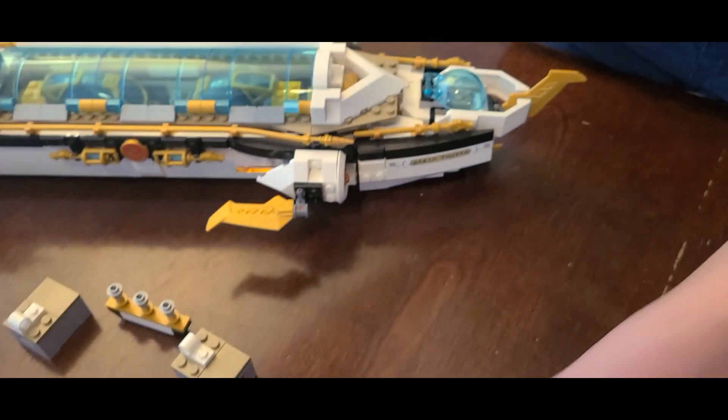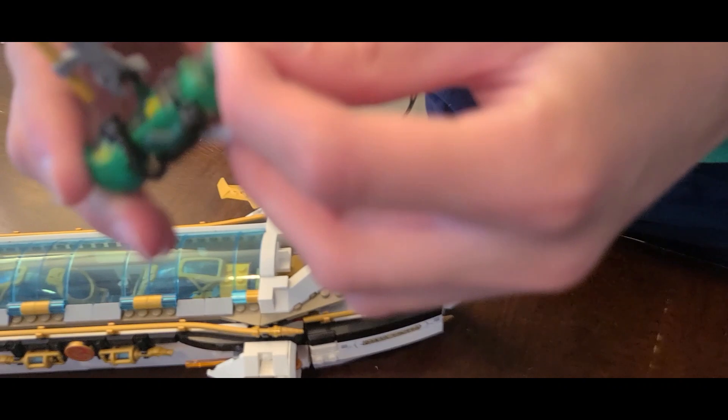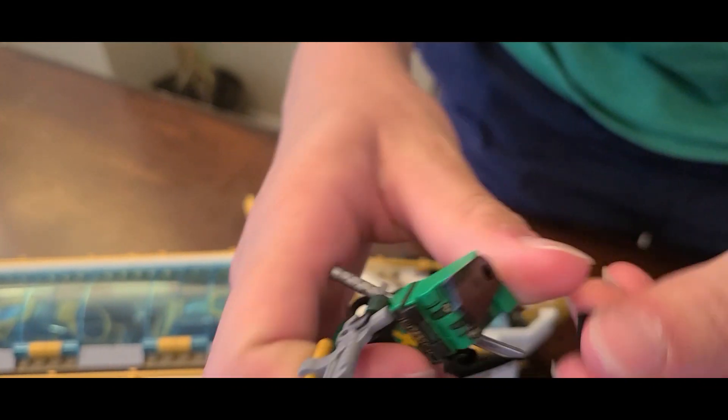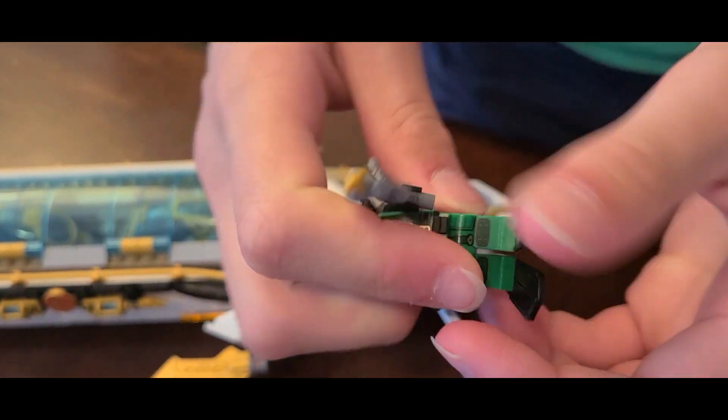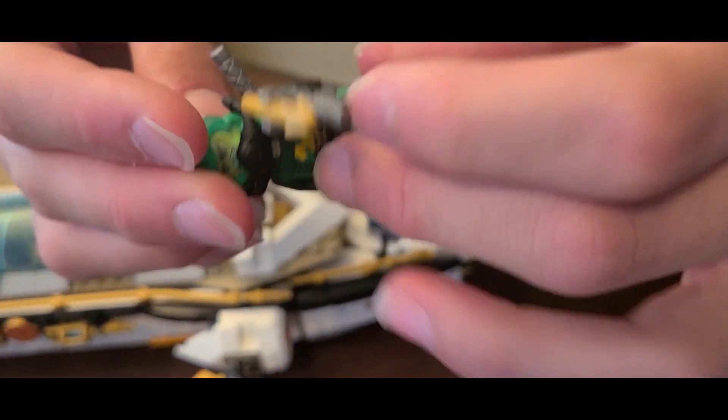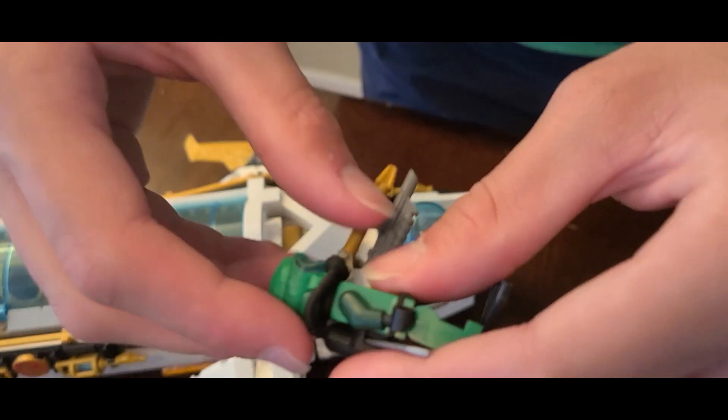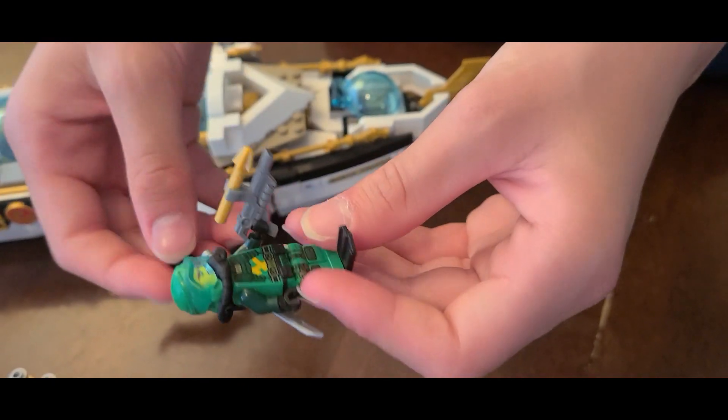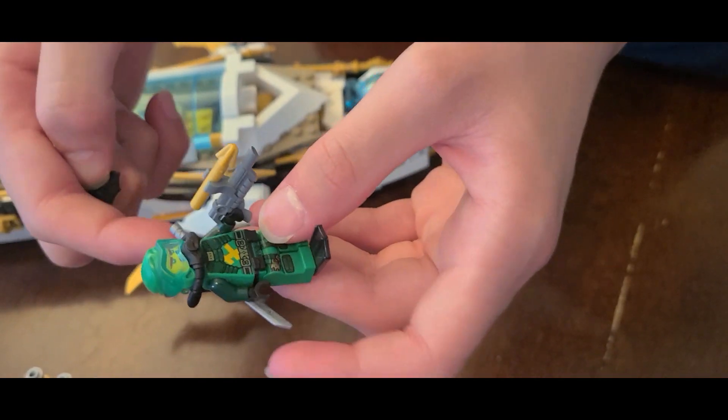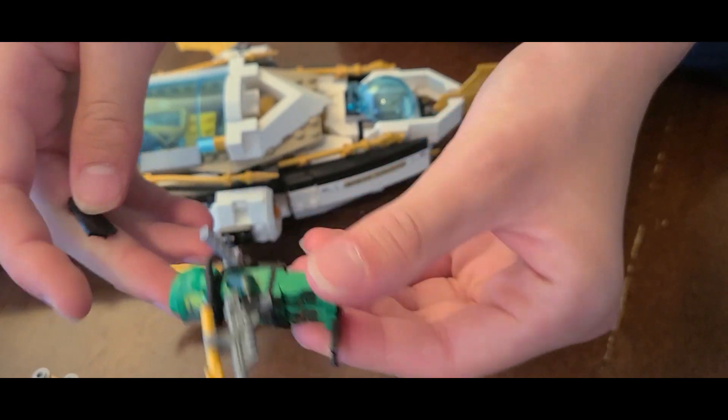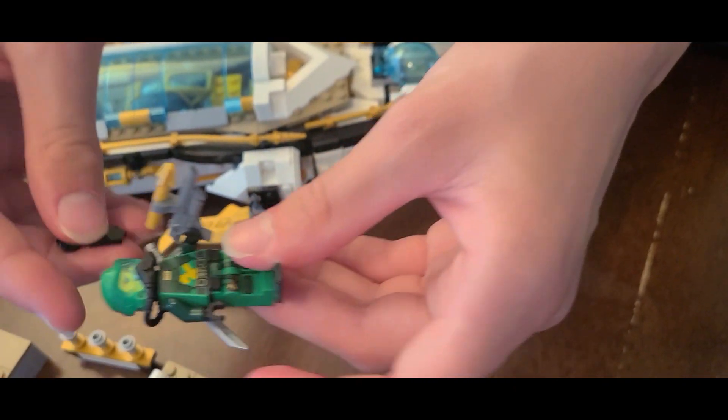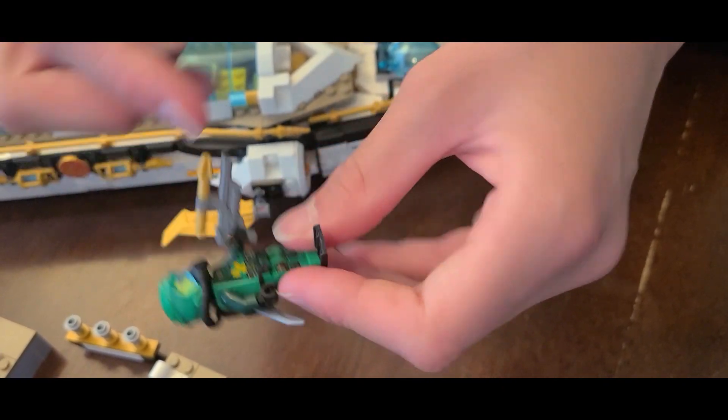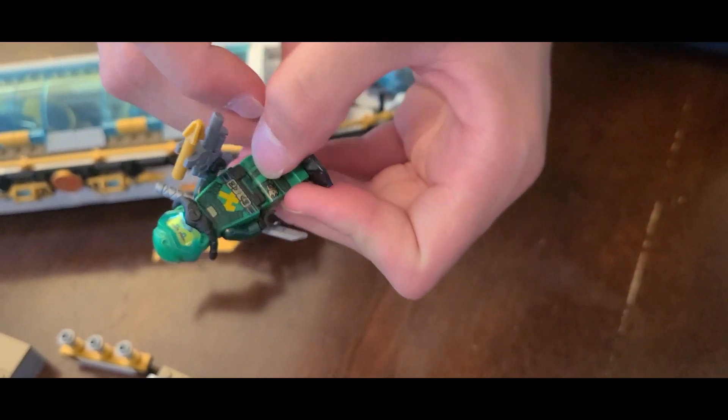Then we have Lloyd. His minifigure is good, nice green color scheme. The green looks good, it's just again an average green scuba ninja minifigure. Again, it's Lloyd, so you know, it's still decent. It's maybe one of the better looking ones because the green just looks kind of uniform. It looks good.